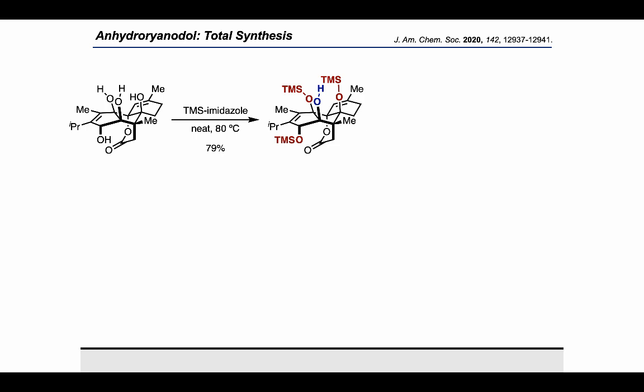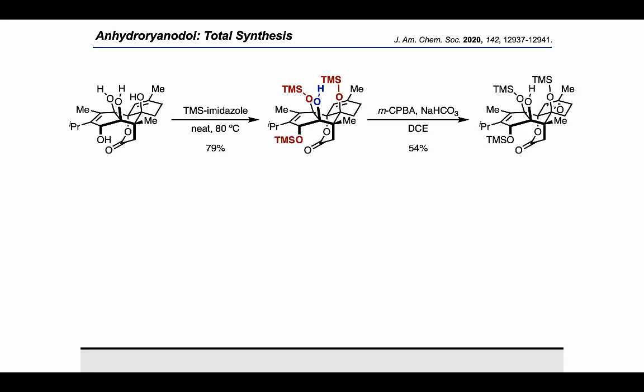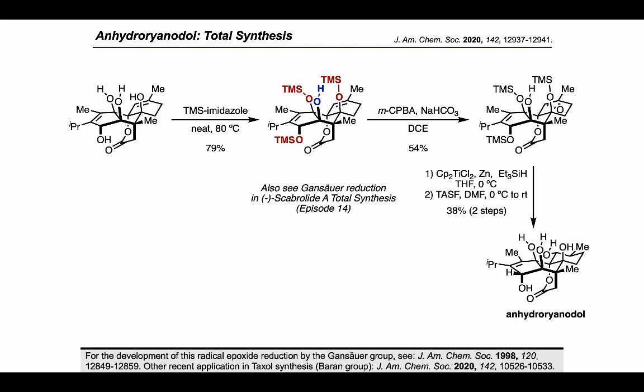The authors used TMS imidazole once more, resulting in the selective protection of three out of four alcohols, after which treatment with MCPBA resulted in stereoselective epoxidation of the alkene on the right side. They were then able to apply a radical epoxide reduction developed by the Gansauer group, previously mentioned in the context of Scabrolide in episode 14, followed by a final global deprotection with TASF, completing the synthesis of anhydroryanidol.